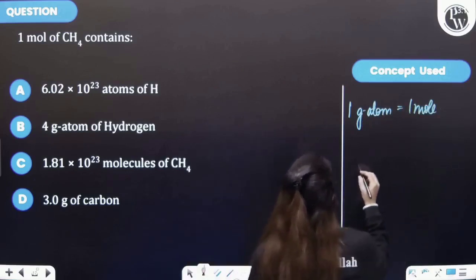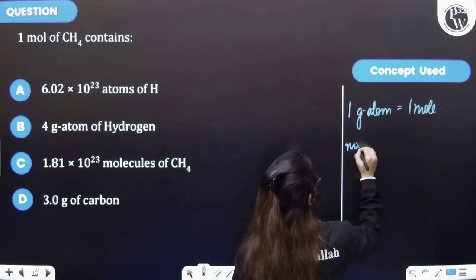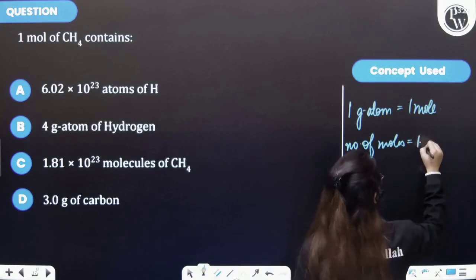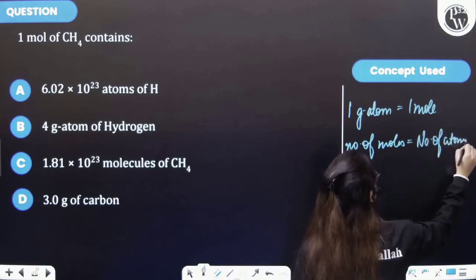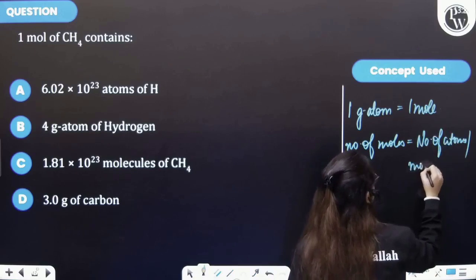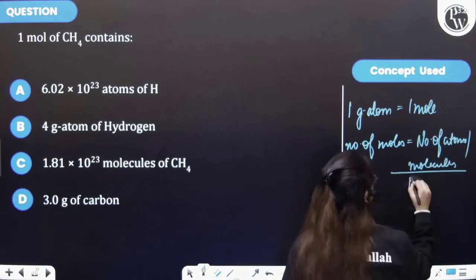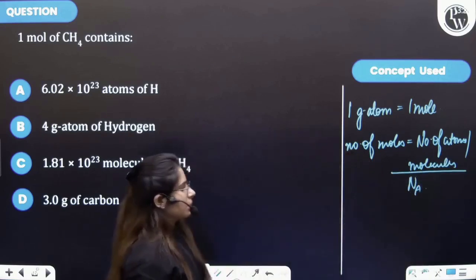Also, if I talk about the number of atoms, number of moles corresponds to number of atoms or molecules divided by Avogadro's number. This Na is Avogadro's number.